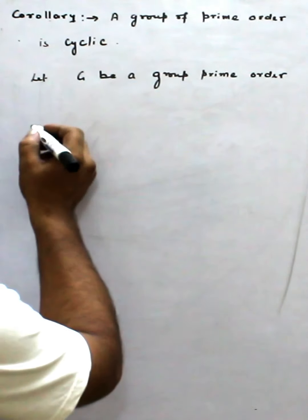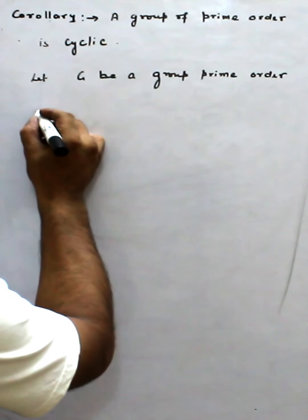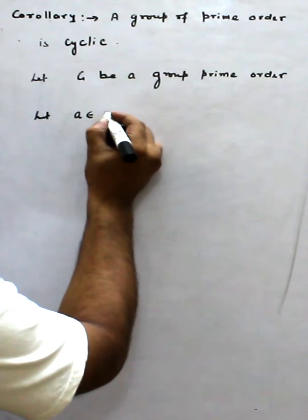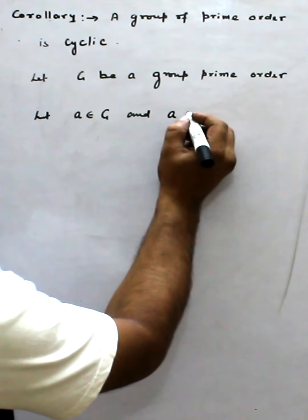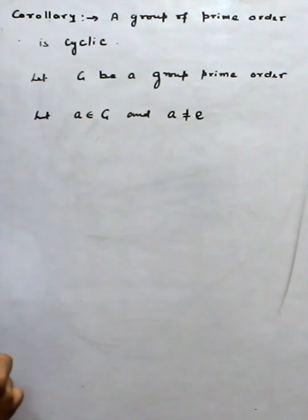So obviously G is non-empty. So let A belong to G and A is not the identity element.